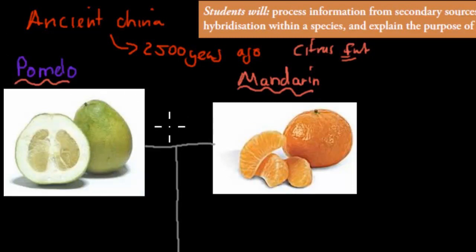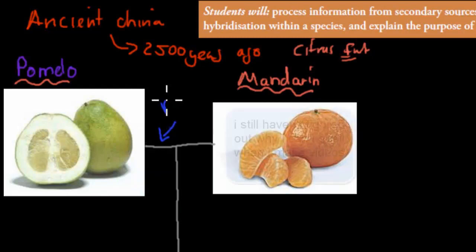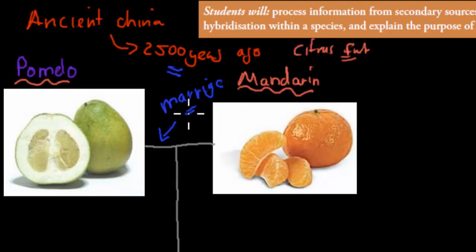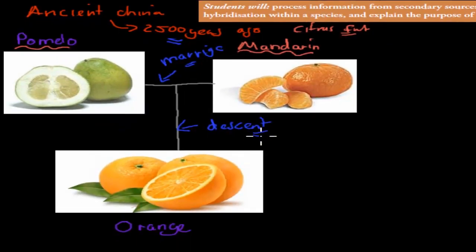And this is obviously from the last video we established that this would be the marriage line. So what you can imagine is that the ancient Chinese decided they would mix the pomelo and the mandarin about 2,500 years ago to see what happened. And the reason why they did that is because they produced this offspring, this is the descent line, and the actual offspring they produced was the orange. So that's quite interesting.